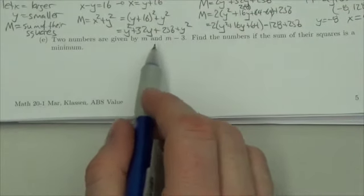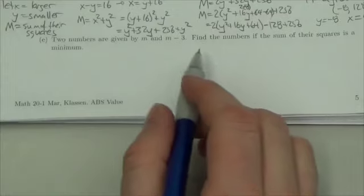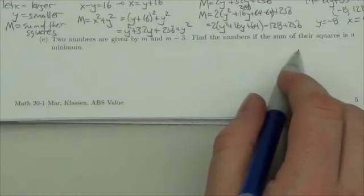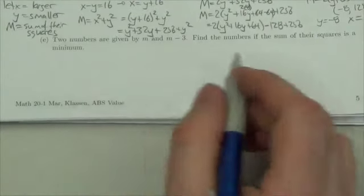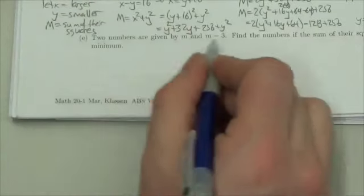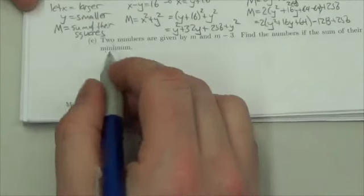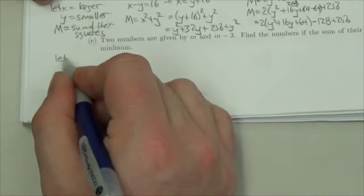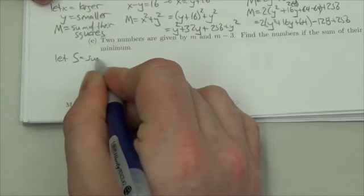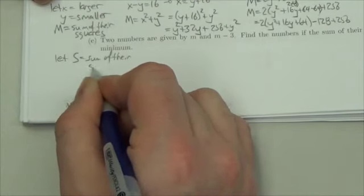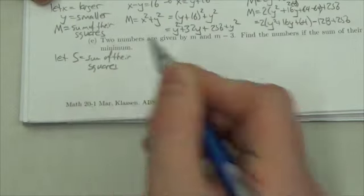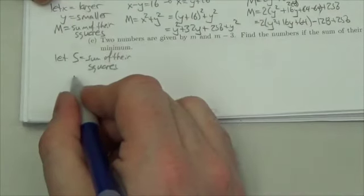Okay, they've already given us the two expressions here and we already know that it's a minimum, so let's create a new variable. We're going to let s be the sum of the squares, the sum of their squares, just to keep track of that.